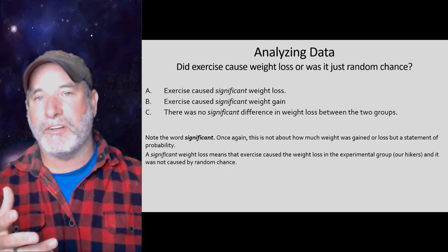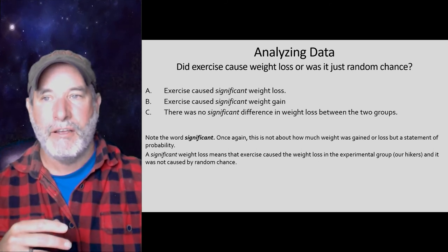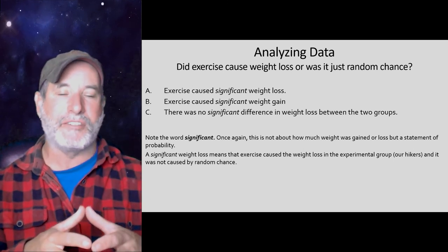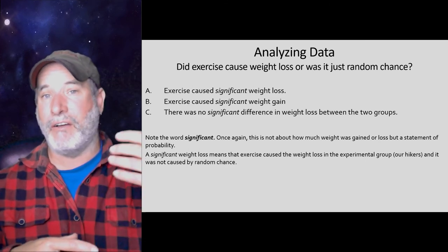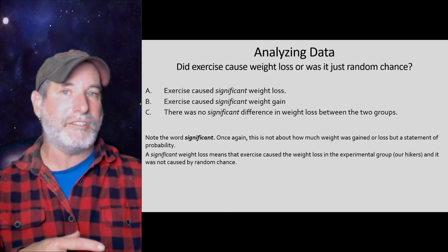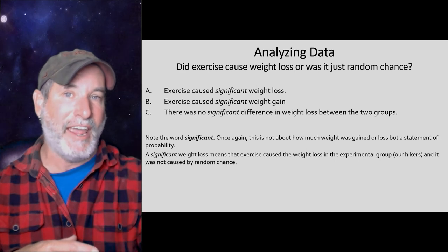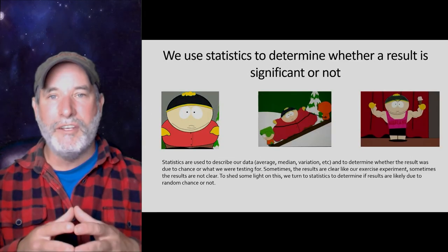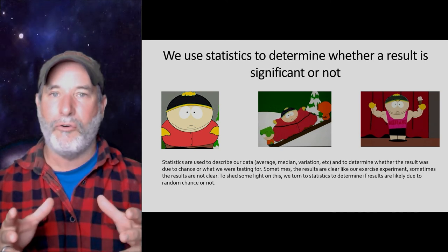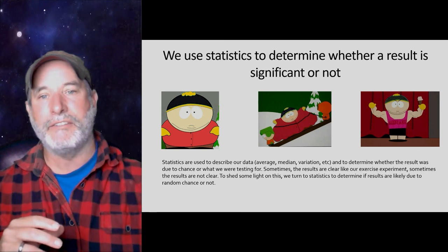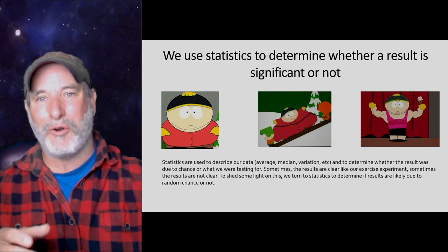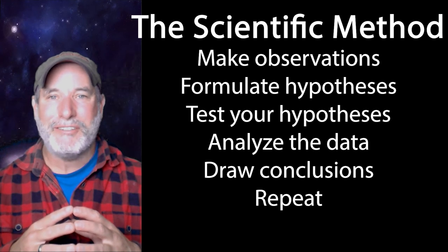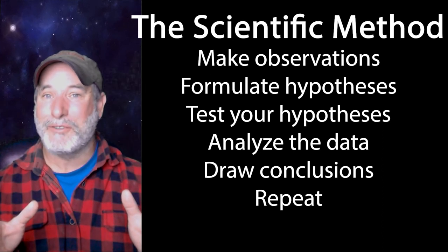We use statistics, and the term 'significant' means the result is not due to random chance. If we find a significant weight loss, we reject our null hypothesis — hiking had no effect on weight — because we falsified it with data. We accept our alternative hypothesis that hiking does indeed cause significant weight loss. Statistics determines whether results are significant. Stay tuned for episode three: how do we analyze data.